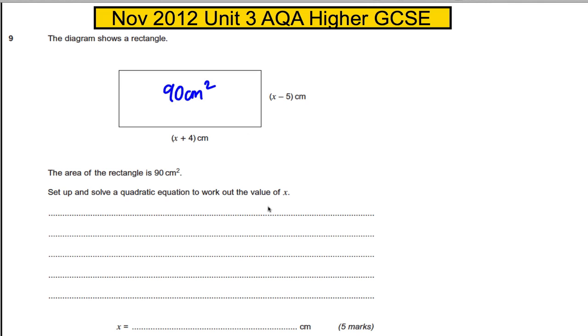Set up and solve an equation to work out the value of x. Now, if you know that the area is 90 and you know the length and the width, you could say that the length x plus 4 multiplied by the width x subtract 5 must be 90.